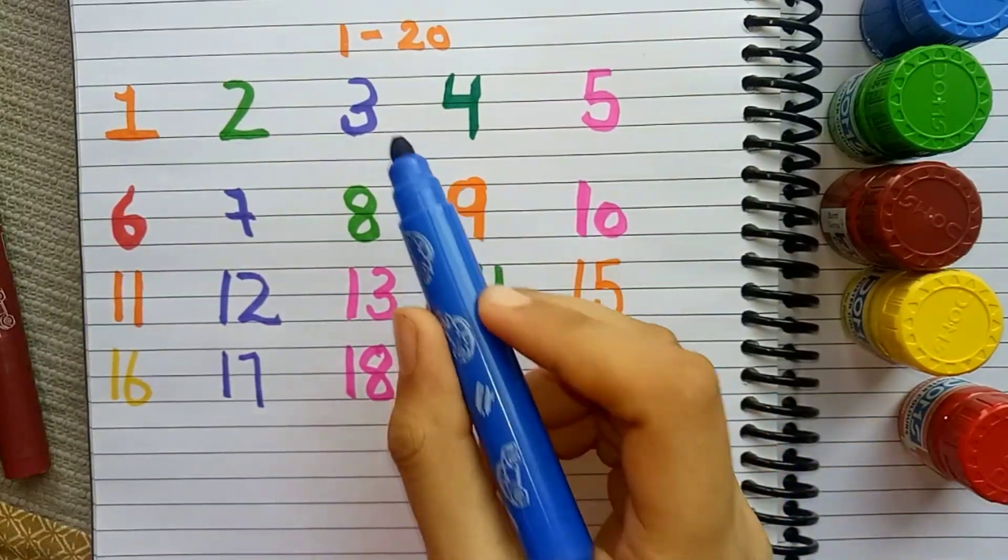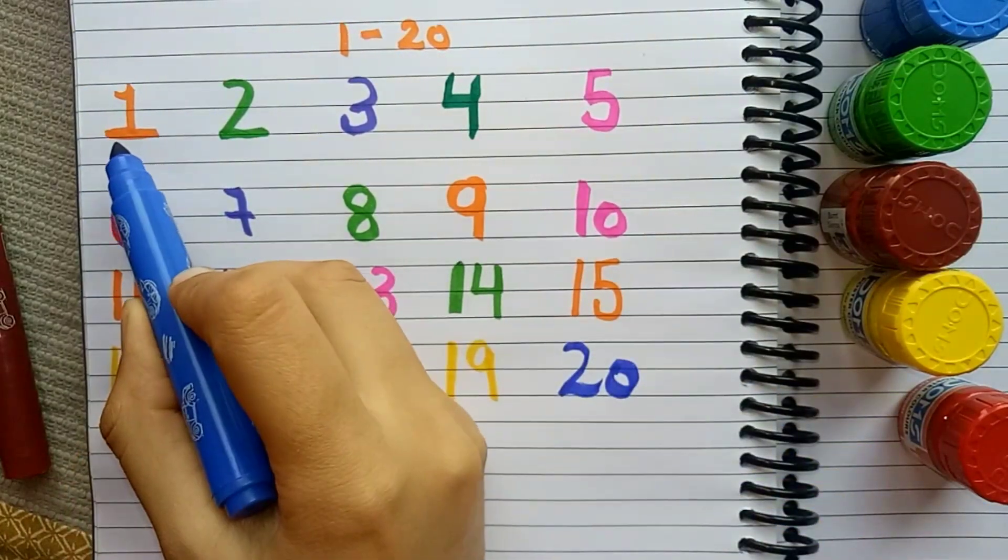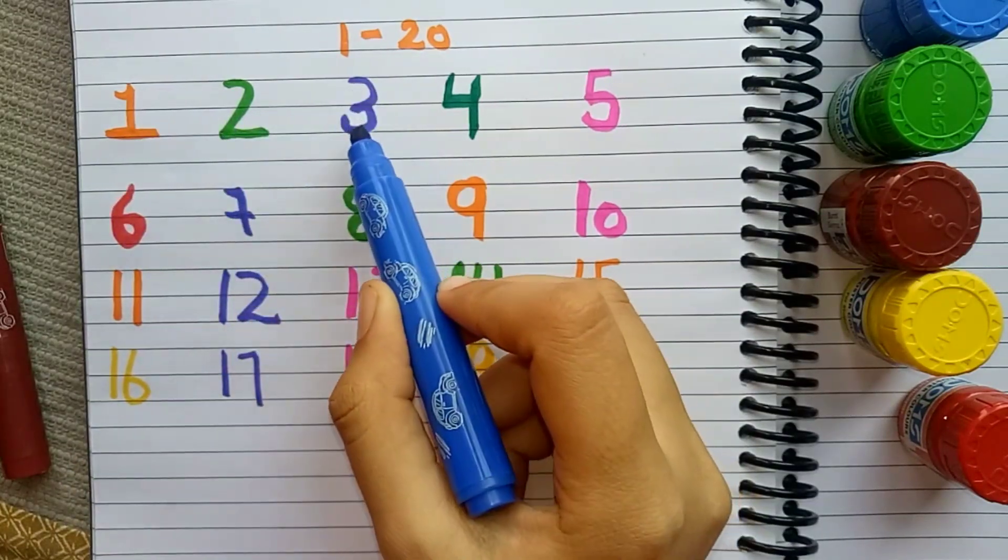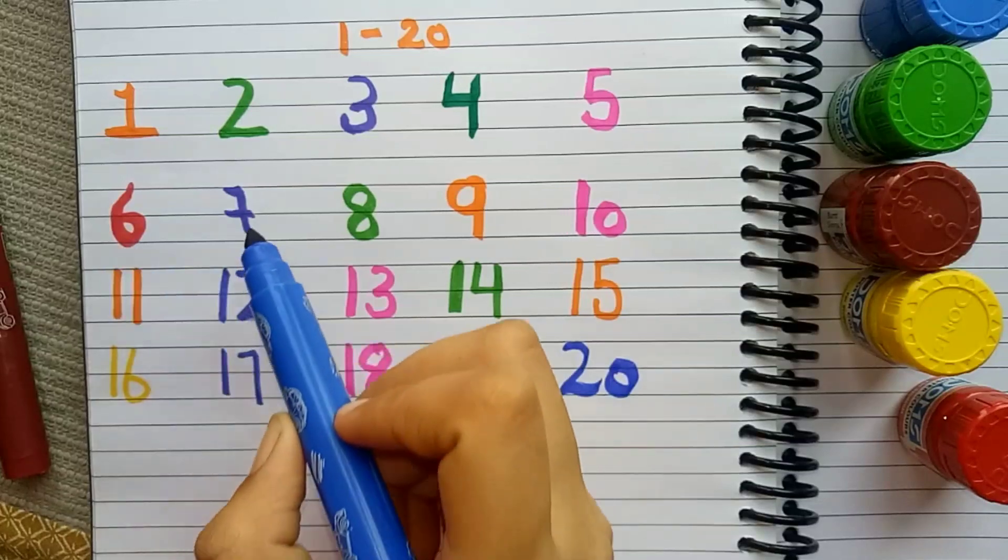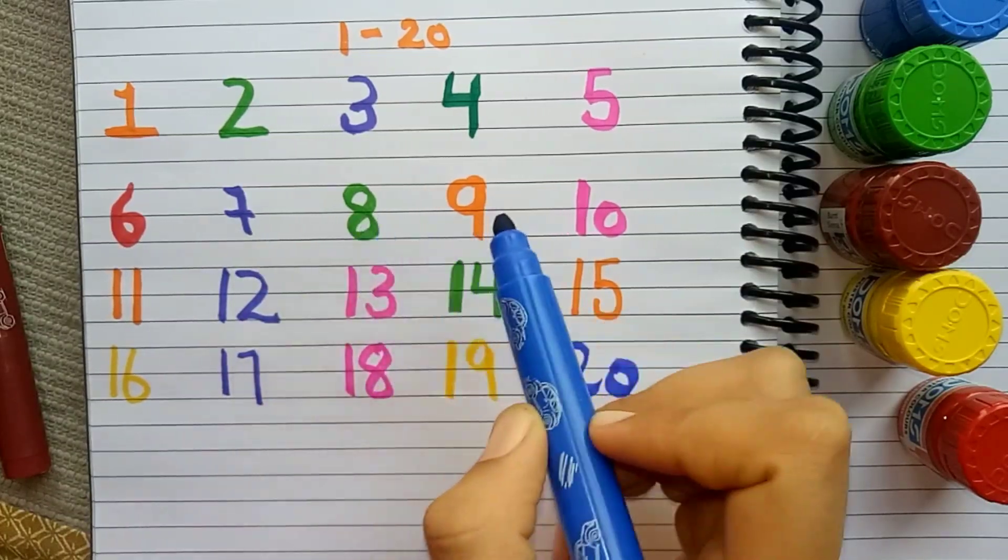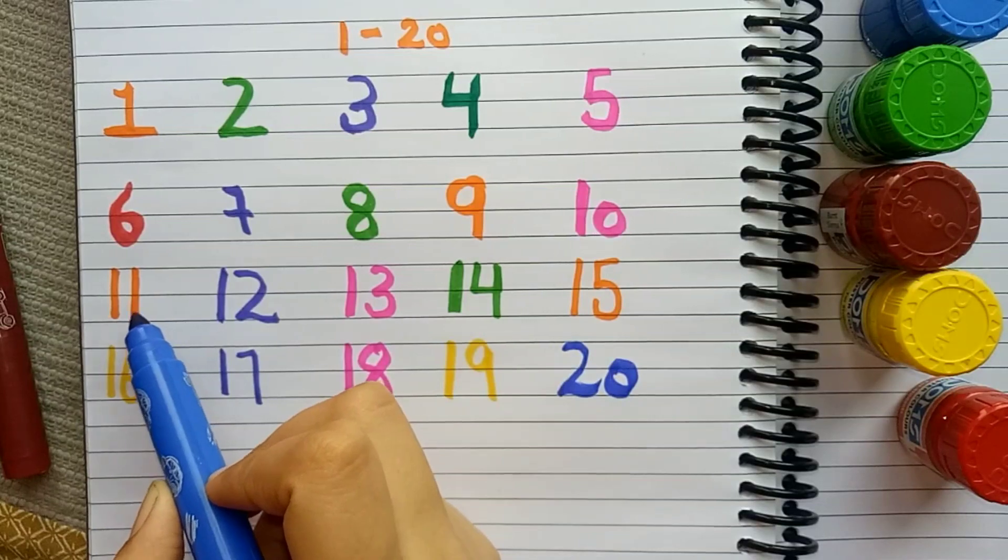Counting 1 to 20: 1, 2, 3, 4, 5, 6, 7, 8, 9, 10, 11.